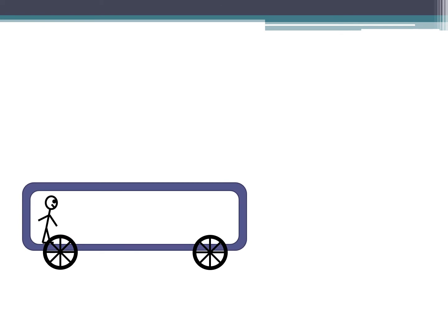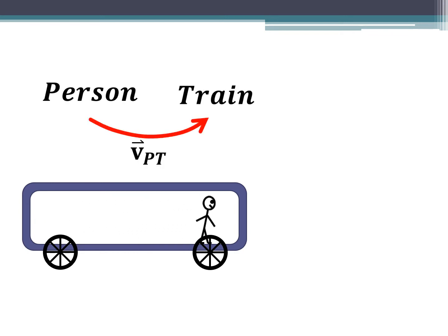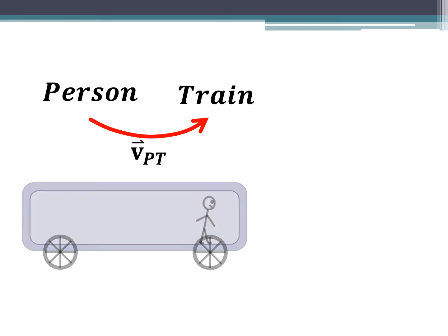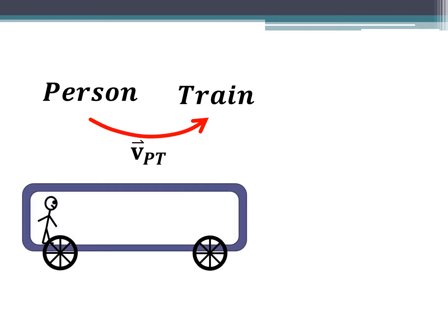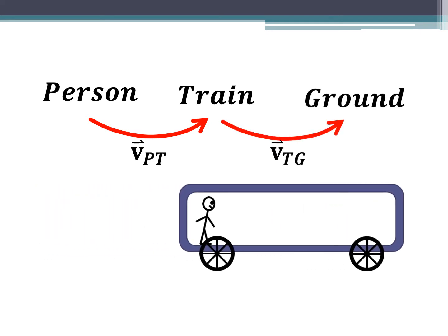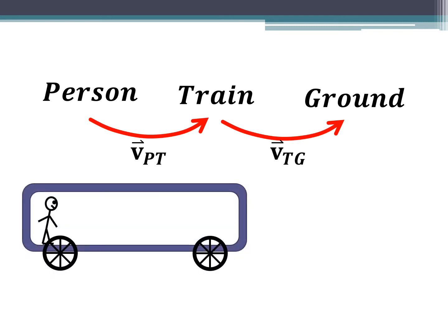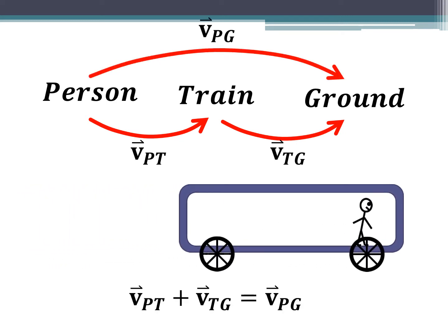Let's do an example with a person on a train. The person is walking and has a velocity relative to the train, but the train itself is also moving relative to the ground. To find the velocity of the person relative to the ground, you take the velocity of the person relative to the train and add it to the velocity of the train relative to the ground. Those two velocities add together to give the total.